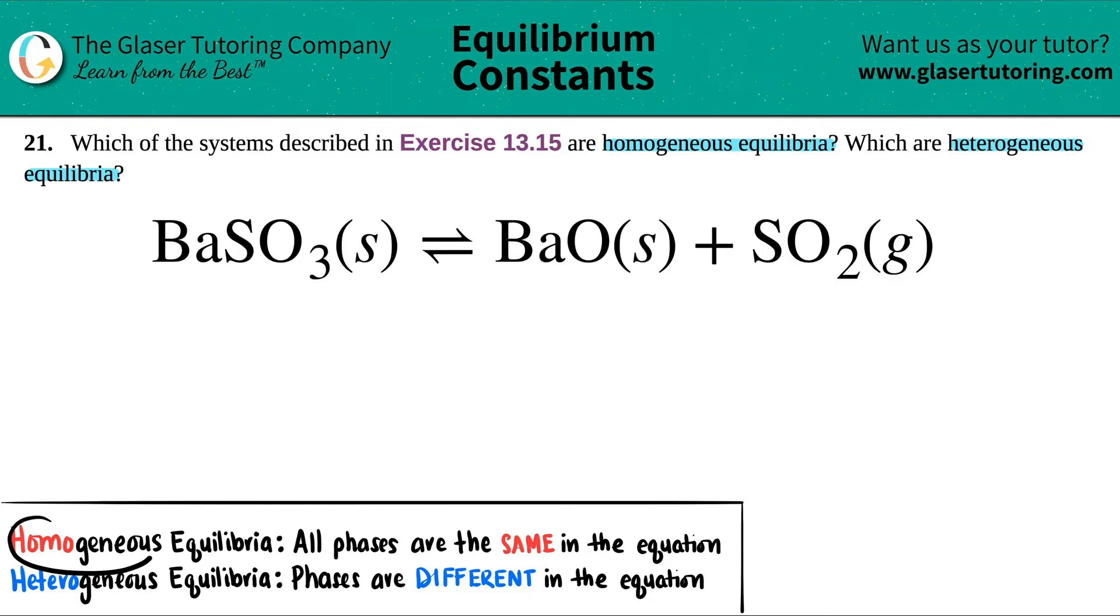So homogeneous mixtures was when you couldn't see any difference in the mixture. Homogeneous equilibrium is when all the phases are the same. Heterogeneous means that your phases just have to be different. They're not going to be the same.